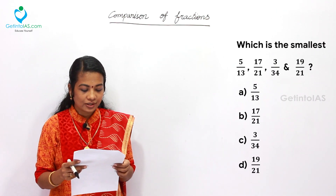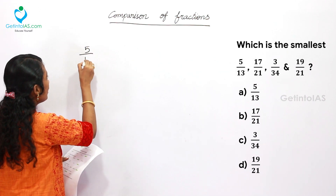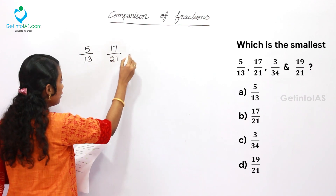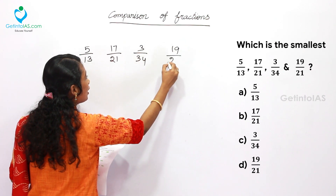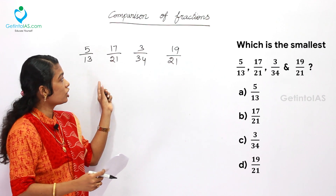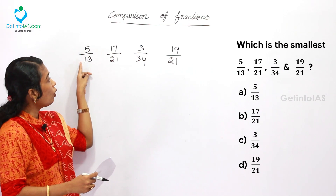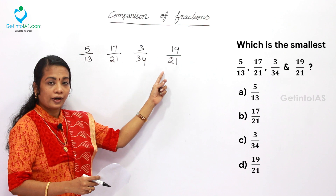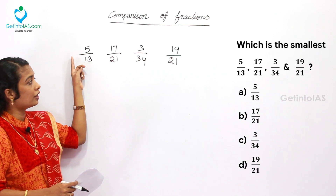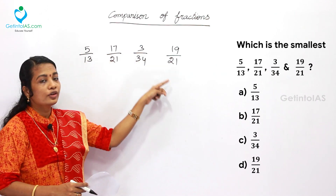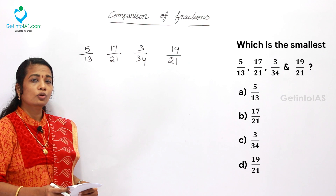Next question: which is the smallest among 5/13, 17/21, 3/34, and 19/21? We should not apply the previous concept here because even though the denominator is higher in all cases, the differences are not equal: 13 minus 5 is 8, 21 minus 17 is 4, and so on. For these kinds of questions, only the cross multiplication method can find the correct answer.